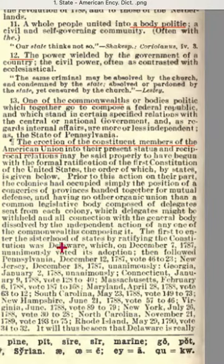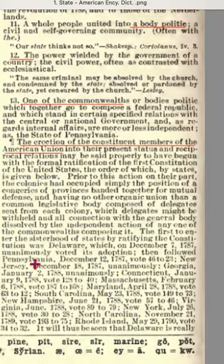The first to enter the sisterhood of states by ratifying the Constitution was Delaware, which on December 17, 1787, unanimously voted its adoption. Then followed Pennsylvania on December 12, 1787, vote 46 to 23; New Jersey on December 18, 1787; and so on and so forth.